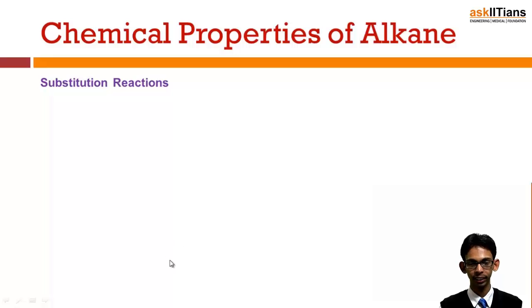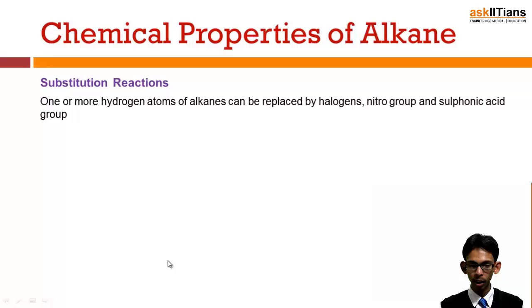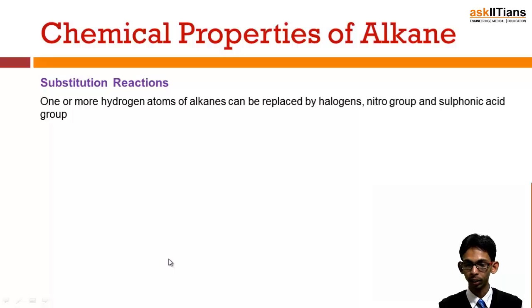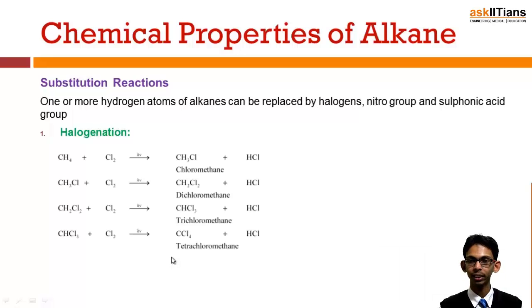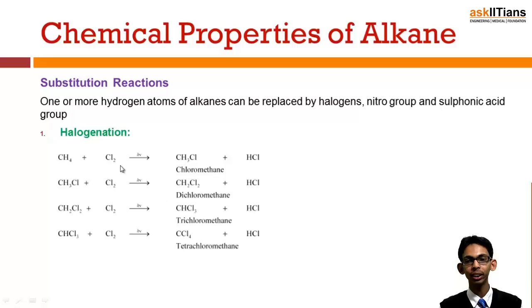Now we are going to discuss substitution reactions in alkanes. One or more hydrogen atoms of alkanes can be replaced by halogen, nitro groups, and sulfuric acid groups. Let's discuss first about halogenation — halogenation is the process in which one hydrogen of an alkane is replaced by a halogen.